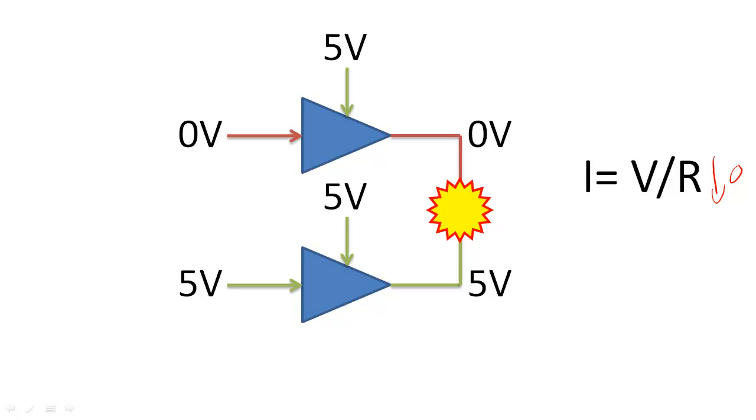Because the resistance of a wire is essentially zero, the components will try to draw infinite current. This type of current draw can damage our circuits.